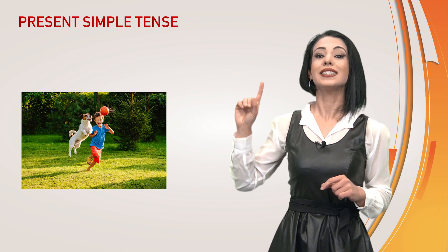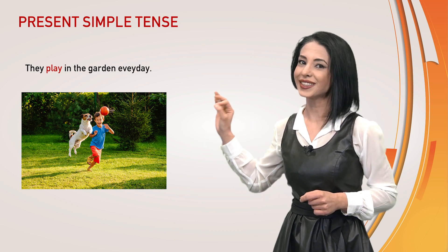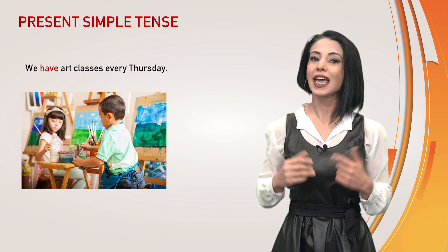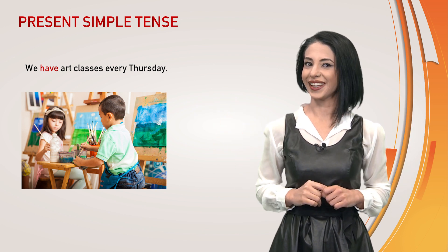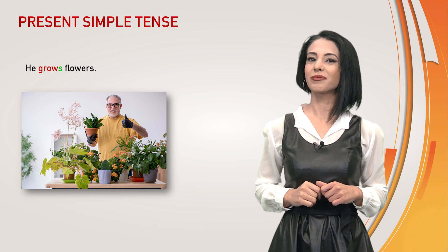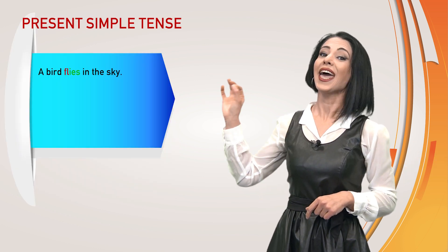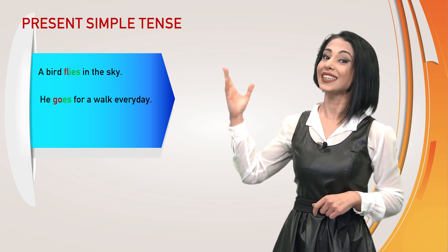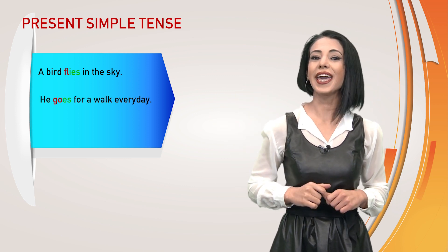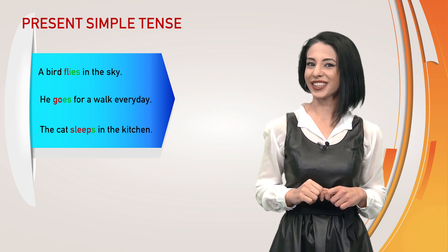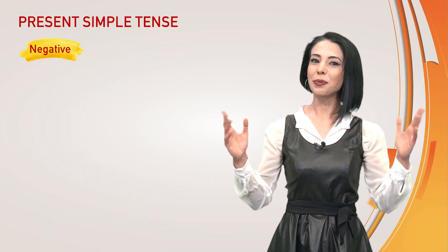Examples: They play in the garden every day. We have art classes every Thursday. She plays guitar. He grows flowers. A bird flies in the sky. He goes for a walk every day. The cat sleeps in the kitchen.